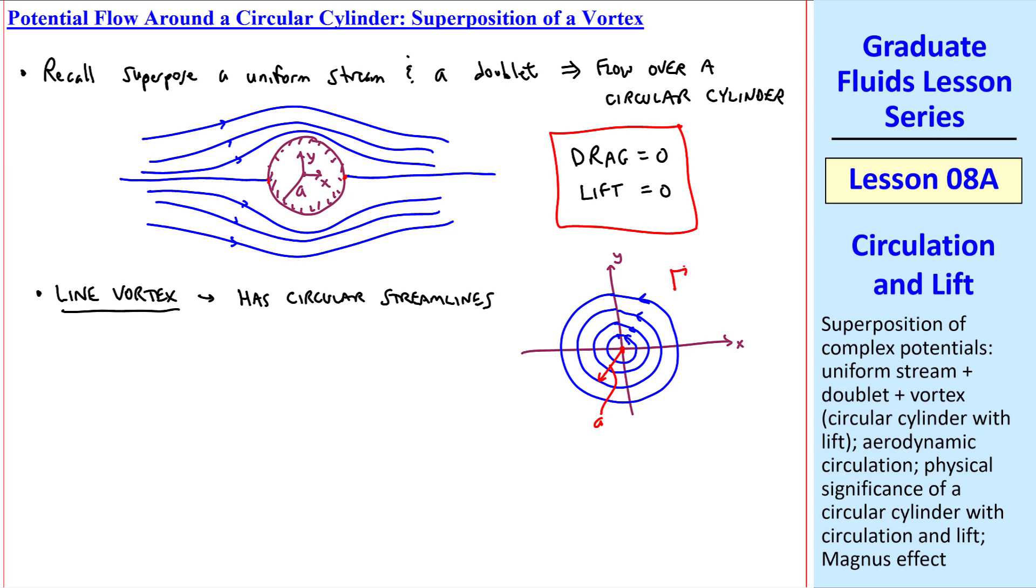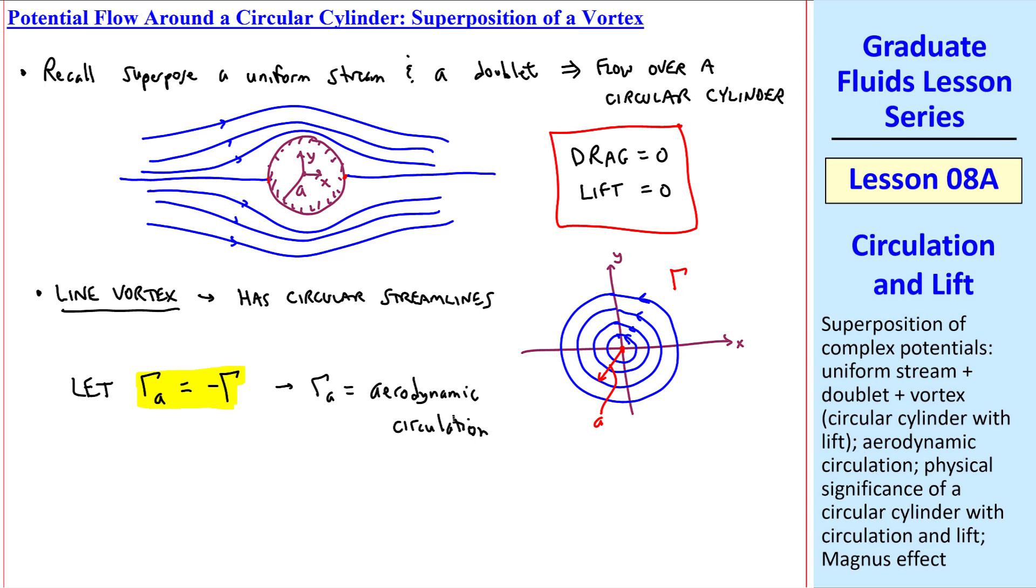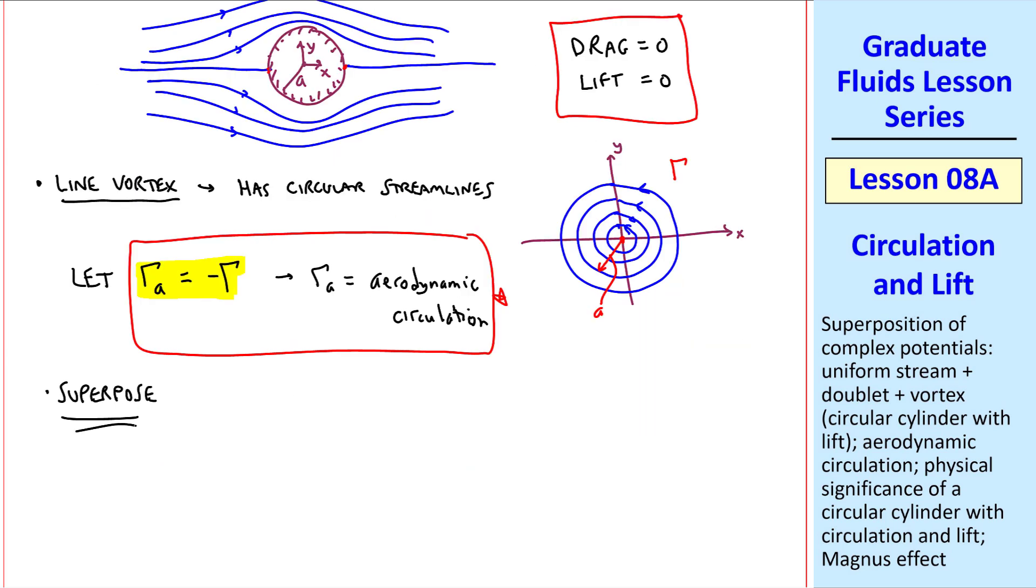The strength of this vortex is gamma. To generate vertical lift, we want a clockwise rather than a counterclockwise vortex. So let's define gamma A as negative gamma, where gamma A is what I'll call the aerodynamic circulation. So gamma A will be positive when the vortex is clockwise, opposite of what I drew here.